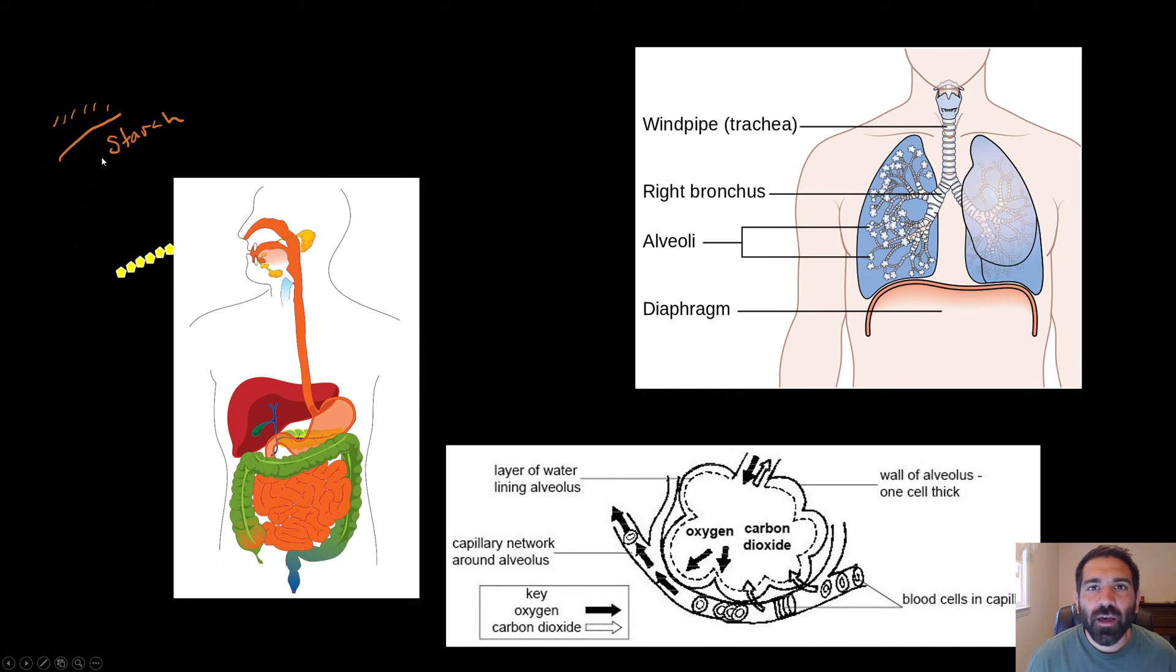When you eat, that starch goes into your digestive system and then it breaks apart those glucose molecules and sends them around your body through your bloodstream to all the cells that need the glucose. That is how you get your glucose, by digestion, absorption, and then transport to the cells.